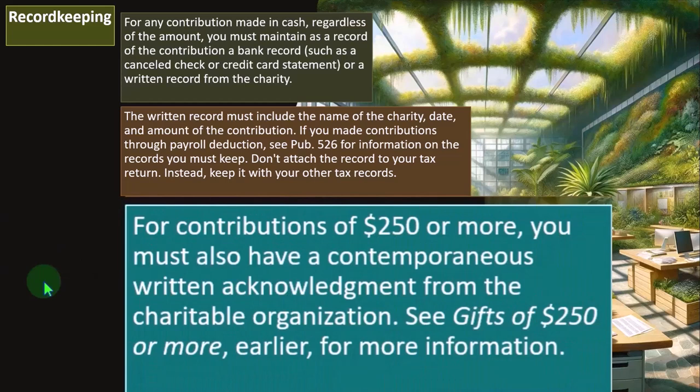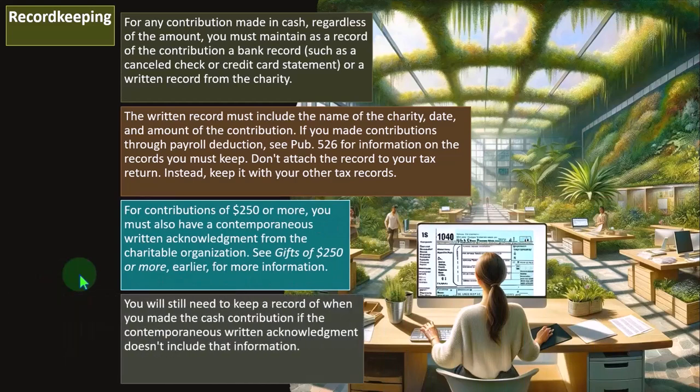For contributions of $250 or more, you must also have a contemporaneous written acknowledgement from the charitable organization. So going over that $250 threshold, you also want documentation from the charity — not just your own written records and a canceled check or electronic transfer. Most charitable organizations will publicize the fact that they're charitable because that's how they raise money, and hopefully they will be good at reporting to you any gifts over $250.